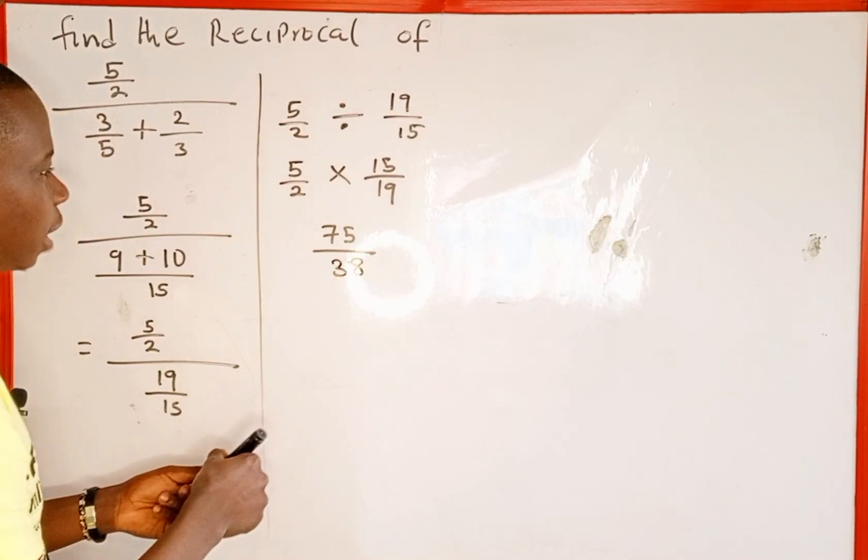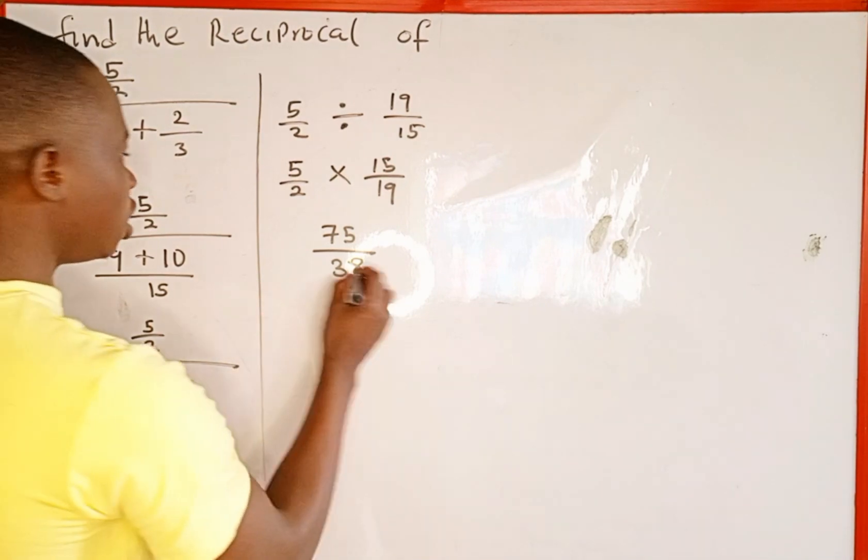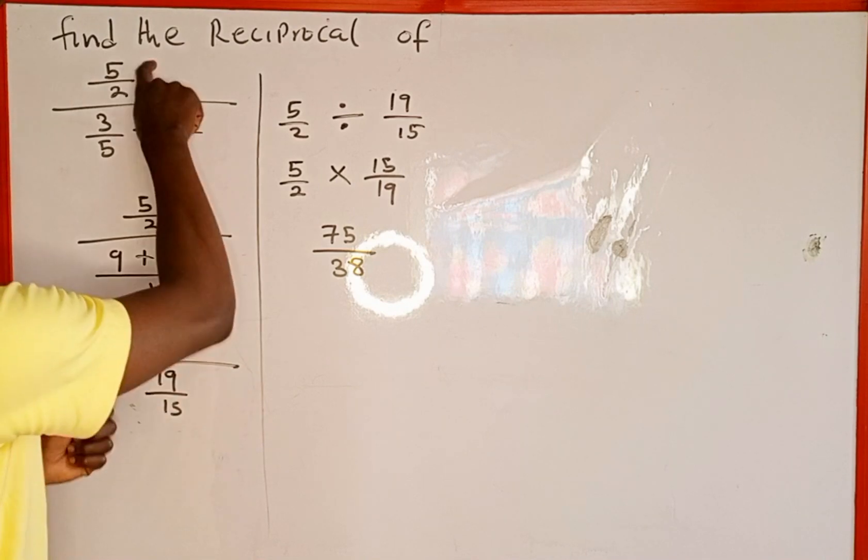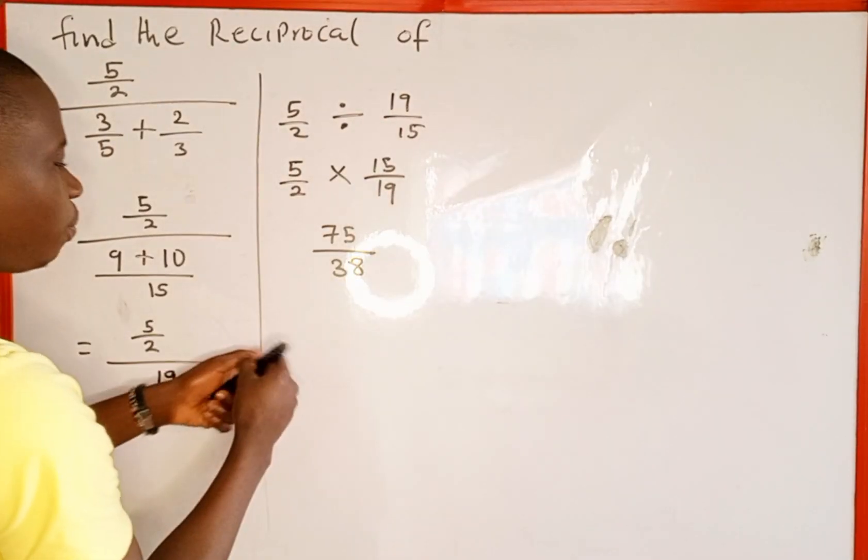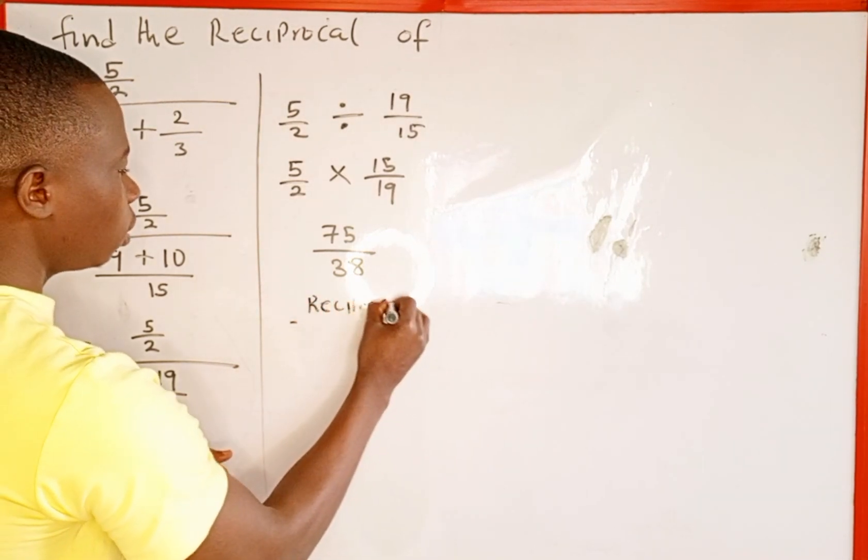Now we cannot reduce this fraction because there's no common factor. So this is the simplification of this expression. But the question says we should find the reciprocal of the expression.